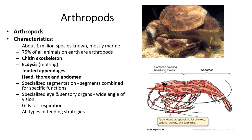Arthropods — insects belong here, but many marine invertebrates are also arthropods. About one million species are known, making them very diverse. In fact, 75% of all animals on Earth are arthropods, mostly due to insects. They have a specialized protein called chitin in their exoskeleton. They molt, as seen with the crab in the top right. They have jointed appendages, allowing specialization, which is one reason for their success. Their body parts are segmented into head, thorax, and abdomen. They also have specialized eyes and sense organs and gills for respiration.